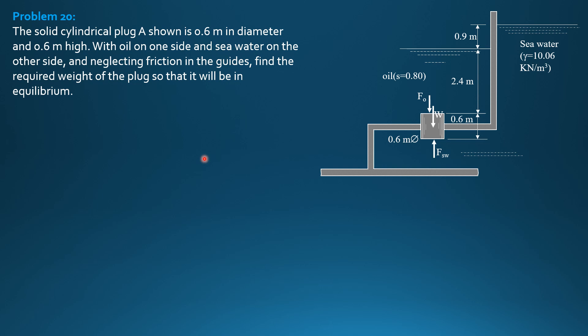So our equation: FSW equals FO plus W, or W plus FO. FSW is pressure at the centroid, or specific weight of seawater.